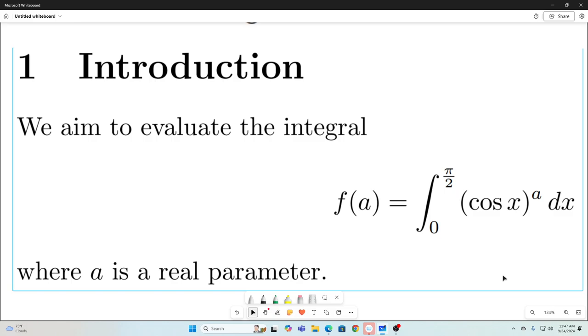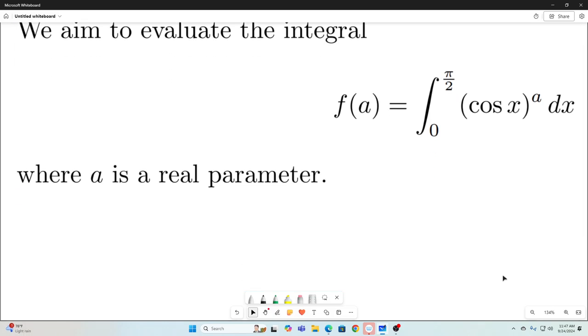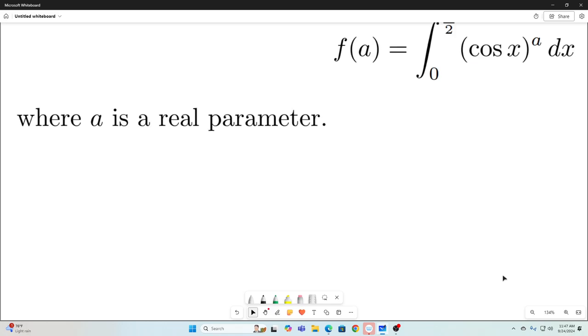First I'm just going to restate the integral. We aim to evaluate the integral f of a equals the integral from 0 to pi over 2 of cosine of x raised to the a power integrated with respect to x. And we will specify that a is a real number or real parameter.